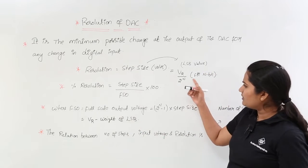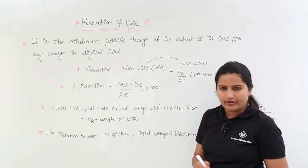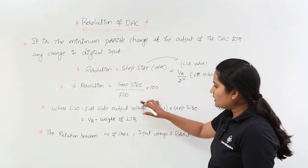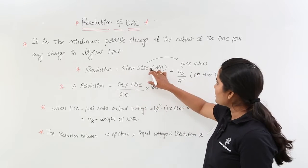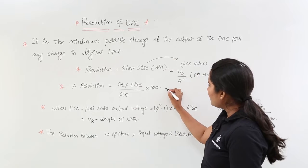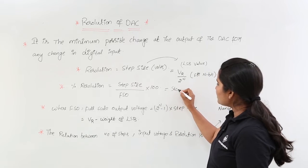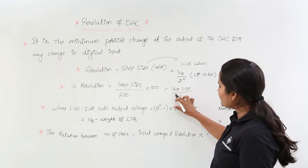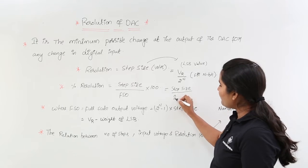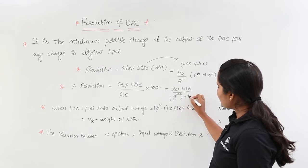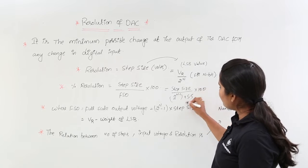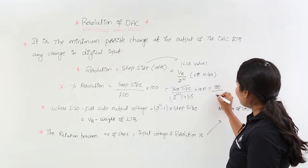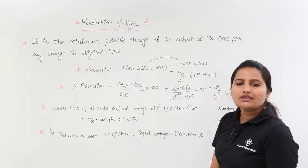Weight of LSB for an n-bit DAC is equivalent to VR by 2 power n. To calculate percentage of resolution you need the FSO value, and step size can be taken from the LSB value. Substituting, step size divided by FSO into 100 — replacing FSO with 2 power n minus 1 into step size — the step sizes cancel, giving 100 divided by 2 power n minus 1 as your percentage of resolution.